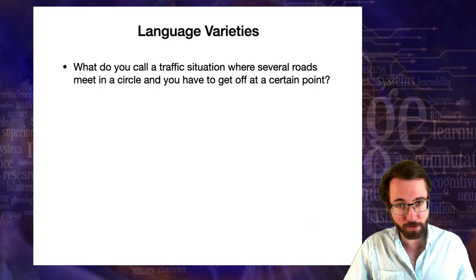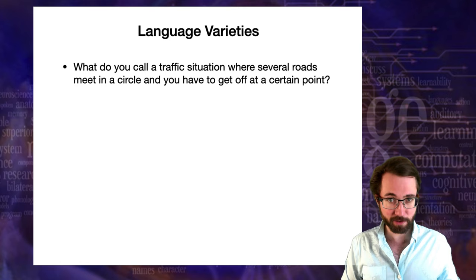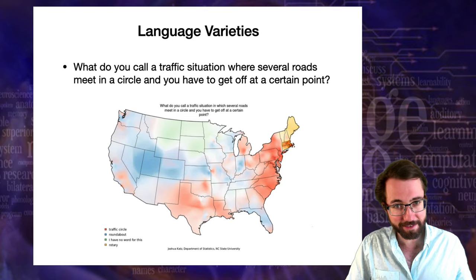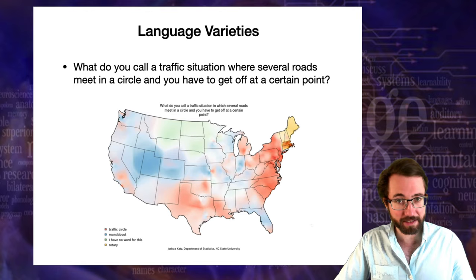Here's another example — maybe not something you deal with in childhood. What do you call a traffic scenario where several roads meet in a circle and you have to exit at a particular point? In the blue areas, that's called a roundabout. In the red areas, a traffic circle. In the yellow areas, a rotary. And in the green areas, they don't have these things. Again, we see regional variation in lexical semantics within English.